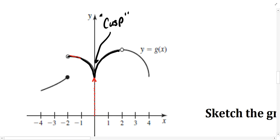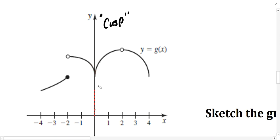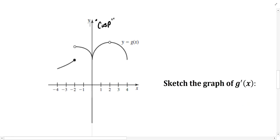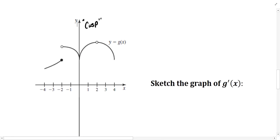At the cusp, the derivative is negative coming in from the left — the slope is downward facing — and then it immediately switches to positive going out to the right. That point of transition is neither positive nor negative; it can't have a downward-facing negative slope and an upward-facing positive slope at the same time. So cusps, like corners as we saw at the beginning of this video, imply that we cannot find the derivative at that point.